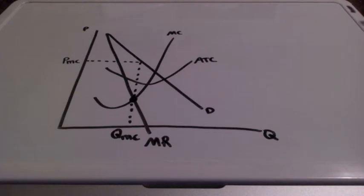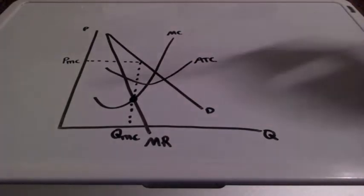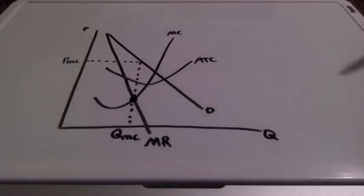We just looked at the short run monopolistically competitive market where they can earn profits or losses. And in this particular example, since price is above average total cost, this firm is earning short run profits. What about the long run?